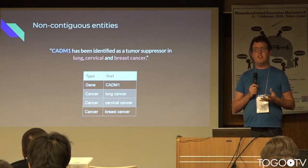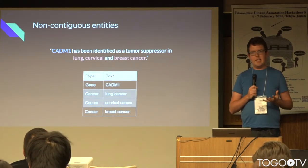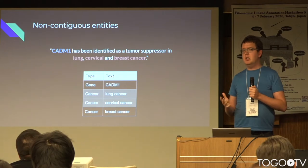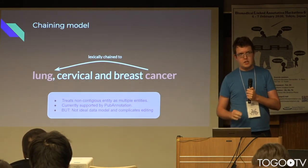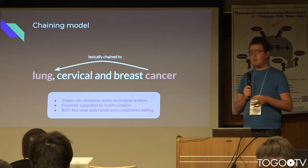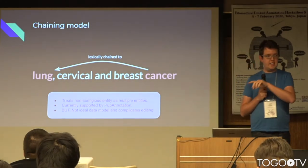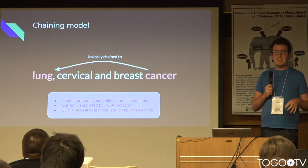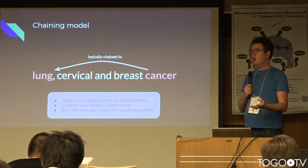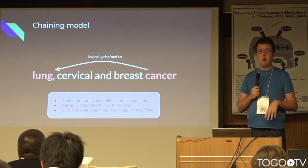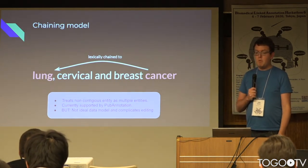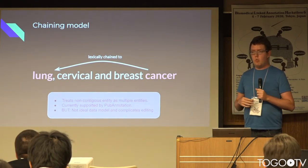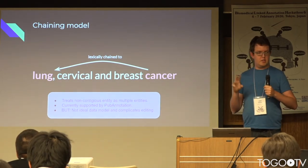What's quite nice is that the pub annotation file format actually supports non-contiguous entities, but at the moment TextAE doesn't support it directly. One way of representing it currently — which is not super elegant — is to have two separate entities: 'lung' is an entity, 'cancer' is an entity, and you create a separate relation between them. Technically that's fine and you can do some post-processing to fix it, but it's a bit ugly. Especially if you hand a tool off to someone that isn't a trained annotator, they'll just give up.